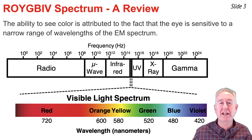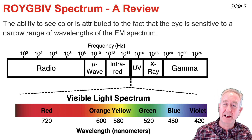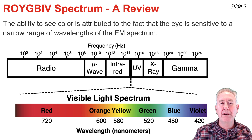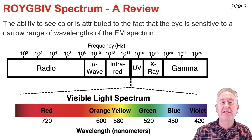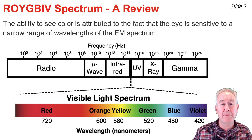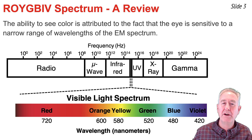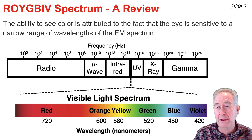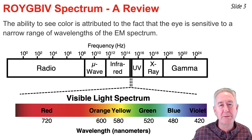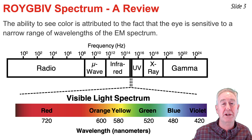Electromagnetic waves exist with a vast range of wavelengths which we refer to as the electromagnetic spectrum. Amidst this vast range, there's a very narrow portion of it that the human eye is sensitive to, and we refer to that region of wavelengths and frequencies as the visible light spectrum. The visible light spectrum consists of waves with wavelengths ranging from 420 nm on the low end up to approximately 720 nm on the high end.